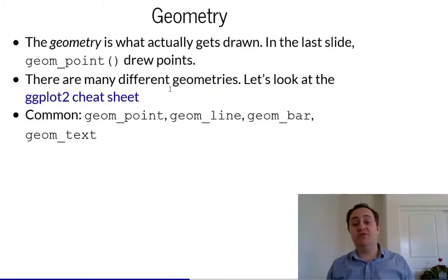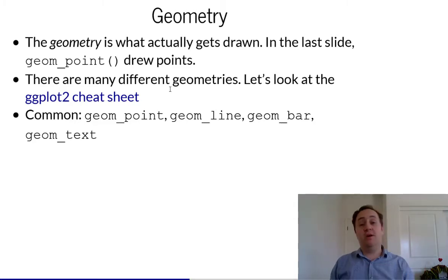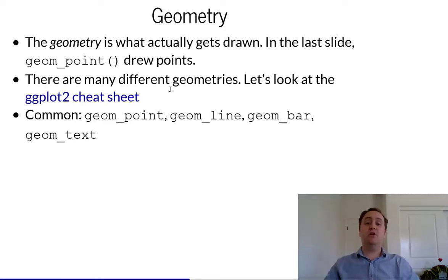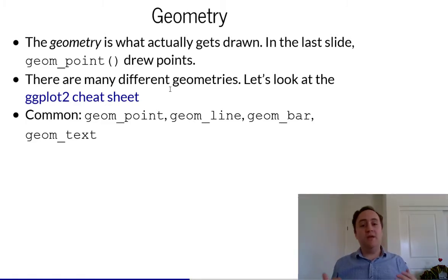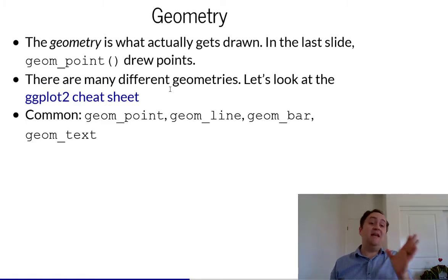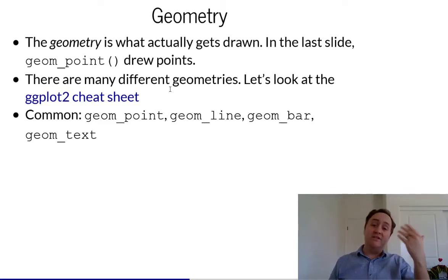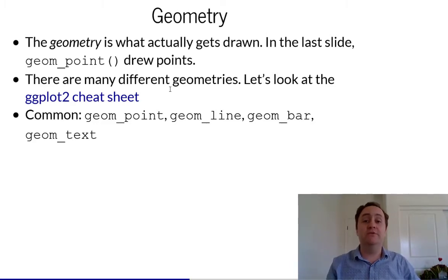The geometry is of course what actually gets drawn. There are lots of different kinds of geometries. For example, geom_point and geom_line are very common ones — just drawing a point or drawing a line. There's also geom_bar for bar plots and geom_text to put little text markers on the data. There are lots and lots of different options. If you can think about the kind of graph you want drawn, there's probably a geometry function either in ggplot2 or in another package that adds on to ggplot2.